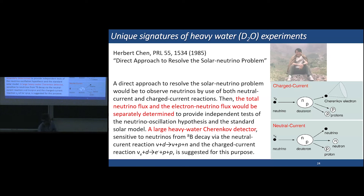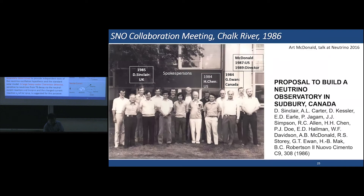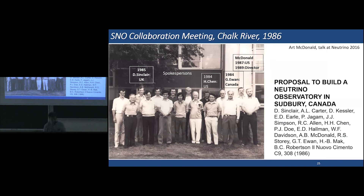He proposed using a heavy water detector with a charged current reaction nu-e + D → e⁻ + p + p in addition to the neutral current reaction nu + D → nu + p + n. This was a great idea. Therefore, soon after this idea, there was a proposal to build a neutrino observatory in Sudbury, Canada using heavy water. This photo is from Art McDonald, showing the initial people in the SNO collaboration.